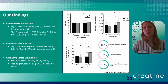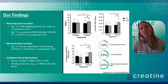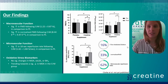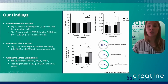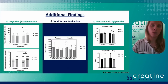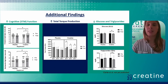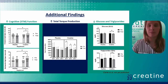For microvascular function we saw significant improvement in the 10-second reperfusion rate — how quickly oxygen resaturated the area — with creatine, but no change with placebo. Unfortunately with our oxidative stress biomarkers we didn't see any significant changes, though there was a trend towards a significant decrease in MDA. Overall we saw a 16 percent improvement in flow-mediated dilation, a 33 percent improvement in normalized FMD, and a 62 percent improvement in microvascular reperfusion. Additional findings included improvement in short-term memory and cognitive function, improvement in total torque production, and a significant decrease in glucose and triglycerides following creatine.